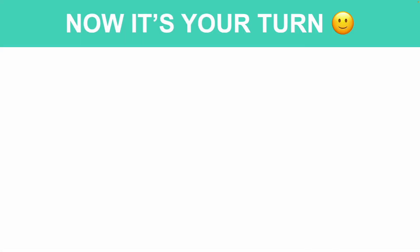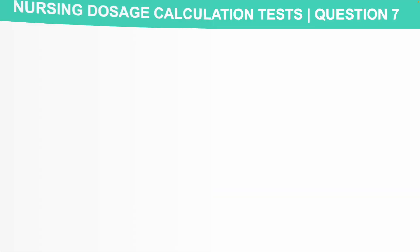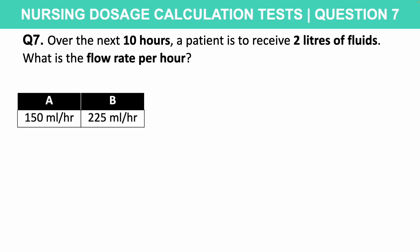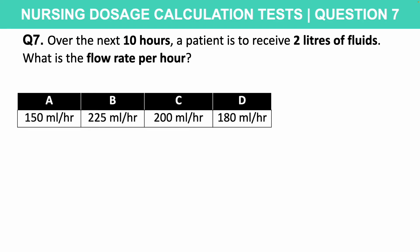Now it's your turn. Please put your answer to question seven in the comments section below for marking. Over the next 10 hours, a patient is set to receive two litres of fluids. What is the flow rate per hour? Is it A: 150 ml/hr, B: 225 ml/hr, C: 200 ml/hr, D: 180 ml/hr, or E: 140 ml/hr? 20 seconds on the timer starting now.